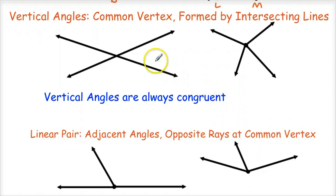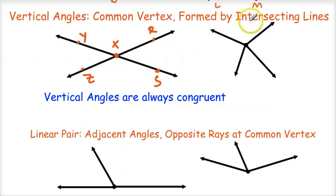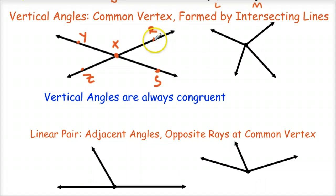The next relationship we're going to talk about are vertical angles. Vertical angles have a common vertex — let's call that X. We'll call this angle YXZ and this angle RXS. These two are formed by intersecting lines, they have a common vertex, they're formed by two intersecting lines — they basically make an X. So YXZ is vertical to RXS. Those two are vertical angles.